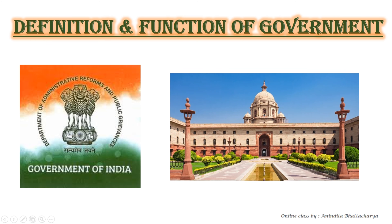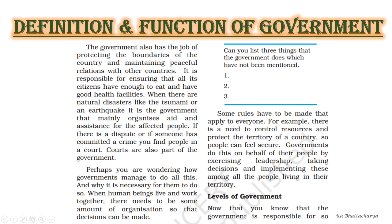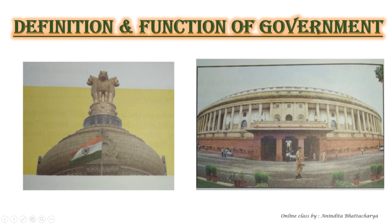Government is actually a set of institutions — it makes laws (law banata hai), implements or applies them (implement karta hai), and also ensures the safety of the people (hum logo ki safety bhi ensure karta hai). This political system is called government.